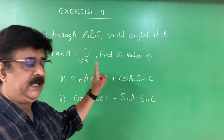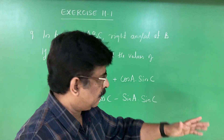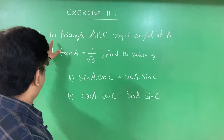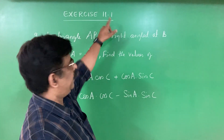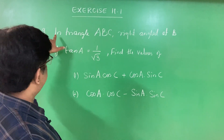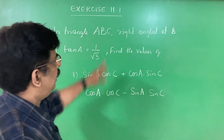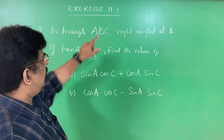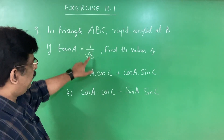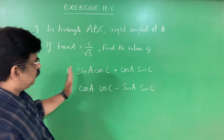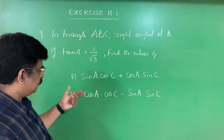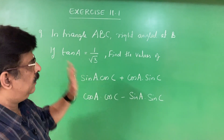See this problem — we solve this problem in the classroom. Some of them came and did this problem on the board. Simple problem it is. Ninth problem of Exercise 11.1. In triangle ABC, right angle at B. If tan A is equal to 1 by root 3, find the values of: sin A into cos C plus cos A into sin C, and cos A into cos C minus sin A into sin C.